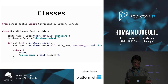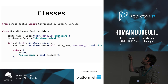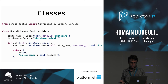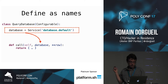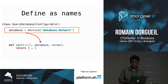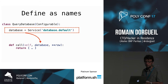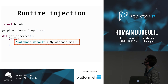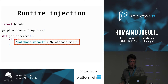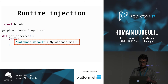Bonobo also provides tools like bonobo.config.Configurable, which allows you to specify options and services. When you write complex transformations you'll usually need options and services. For example, here we have a database service — we don't want to tie it to any specific SQL implementation, so we just say 'I will need a service called database.default' and let the operator provide the implementation. This means you can easily test your transformation by providing a mock database, testing just the transformation logic and not the external dependencies.